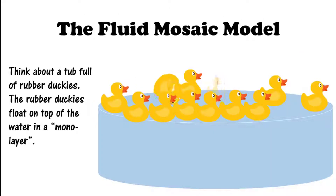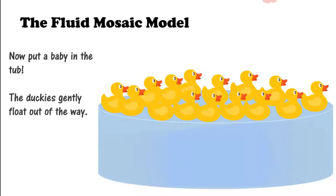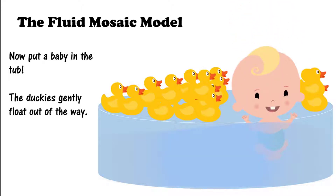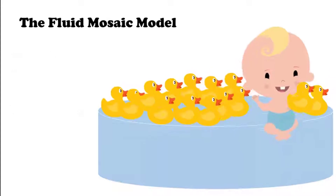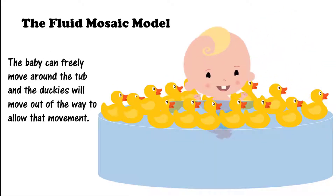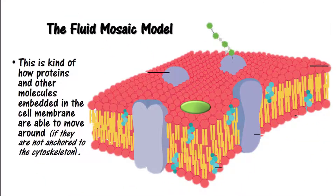Think about a tub full of rubber duckies. The rubber duckies float on top of the water in a monolayer. Now put a baby in the tub — the duckies gently float out of the way. The baby can freely move around the tub and the duckies will move out of the way to allow for that movement. This is kind of how the proteins and other molecules embedded in the cell membrane behave.